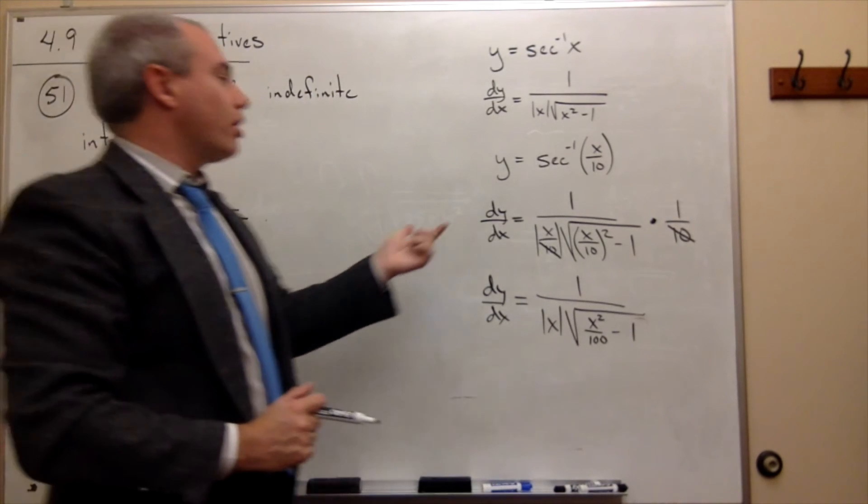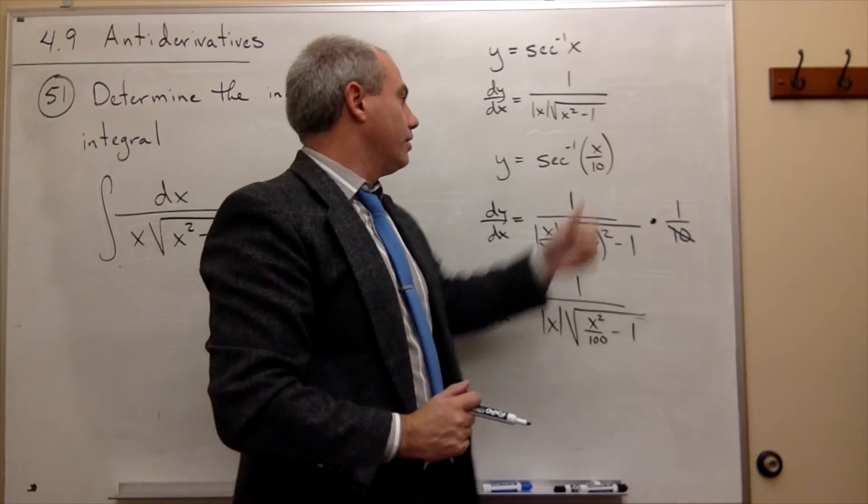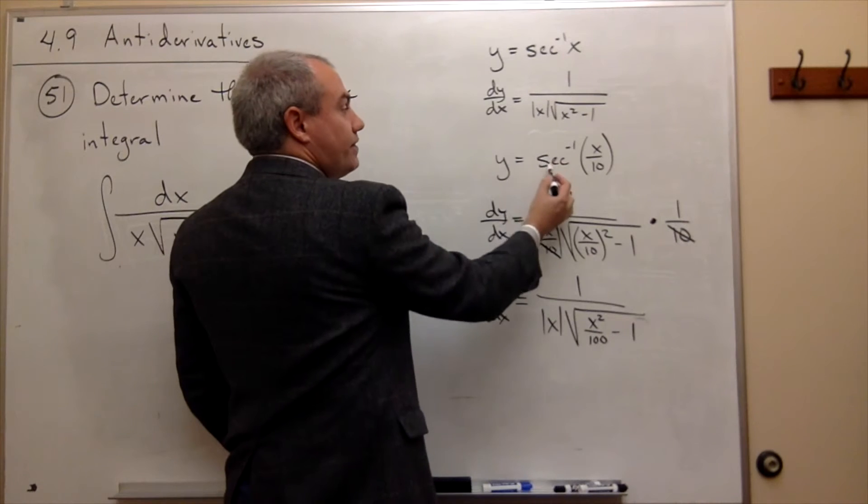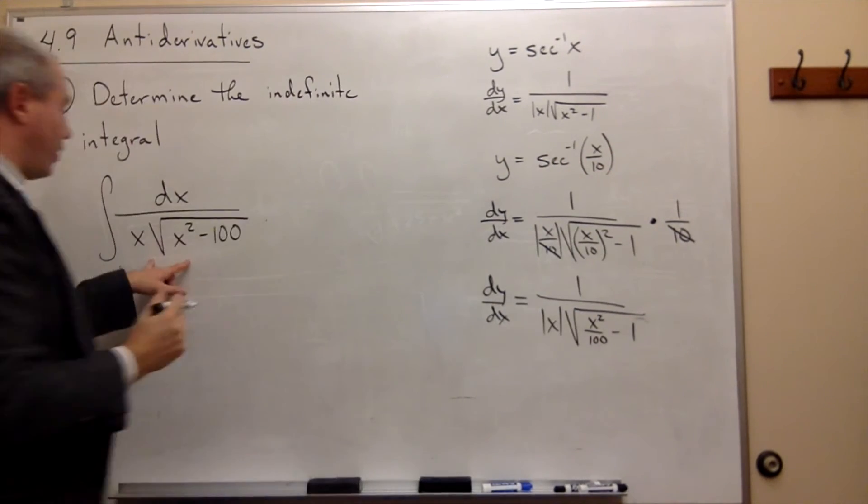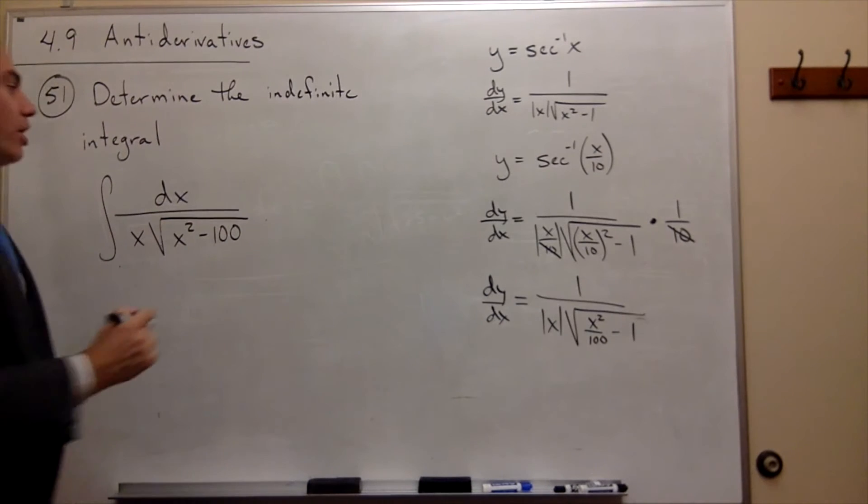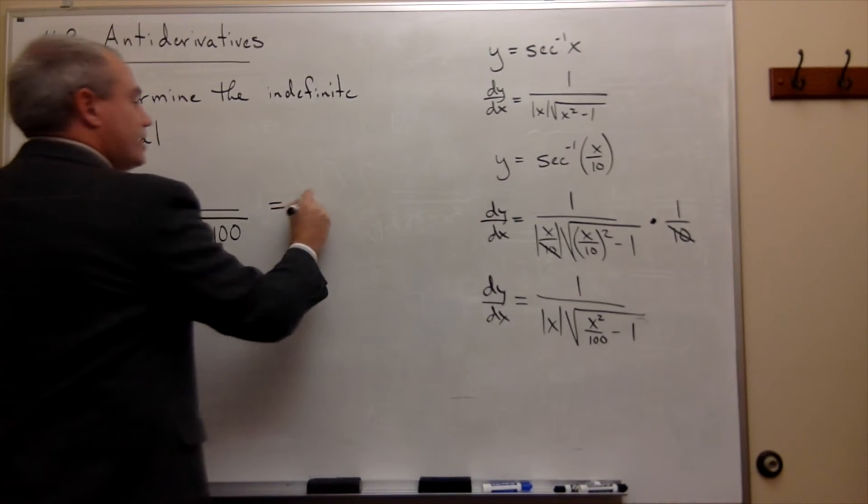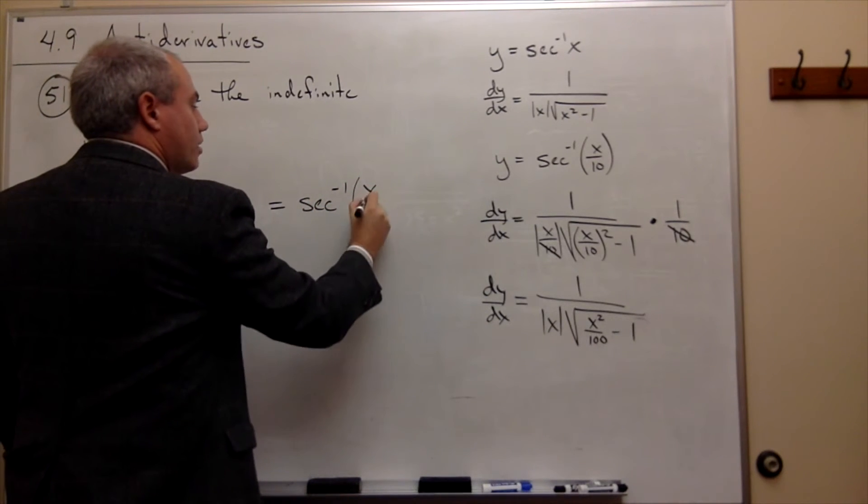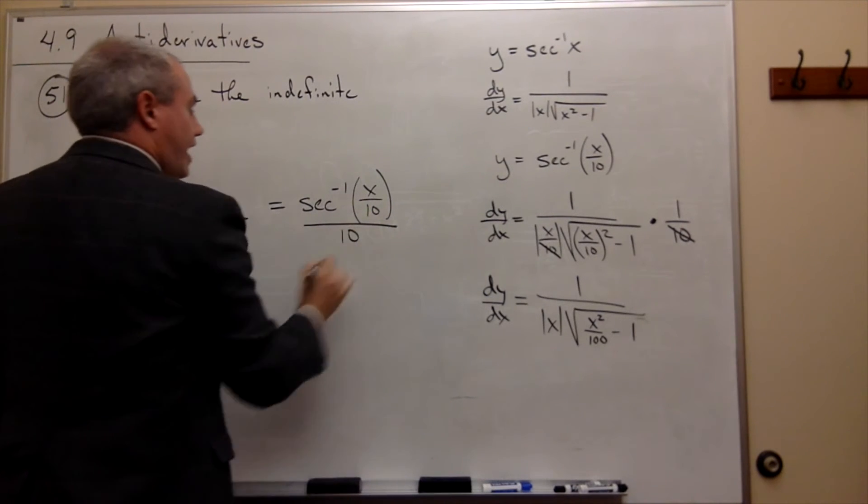So, what I should have started with is not secant inverse of x over 10. I should have started with 1/10 of secant inverse of x over 10, and then I would have gotten exactly what I need. So, let's write it that way. This must equal secant inverse of x over 10 divided by 10.